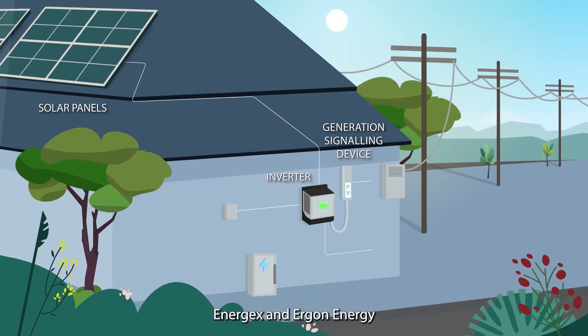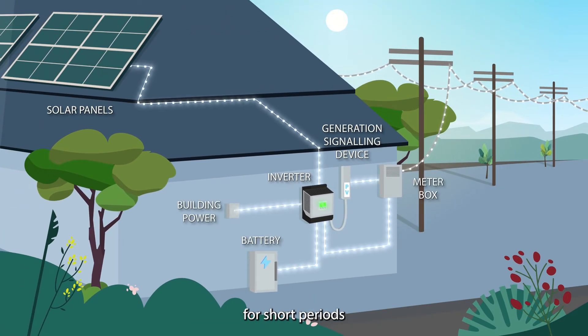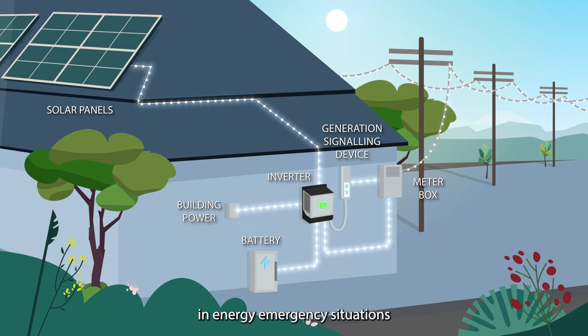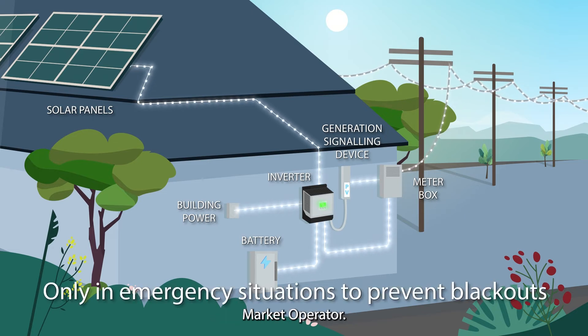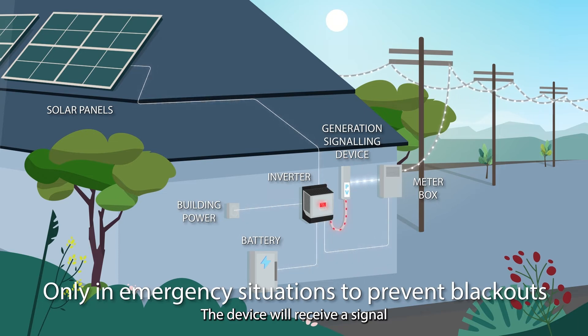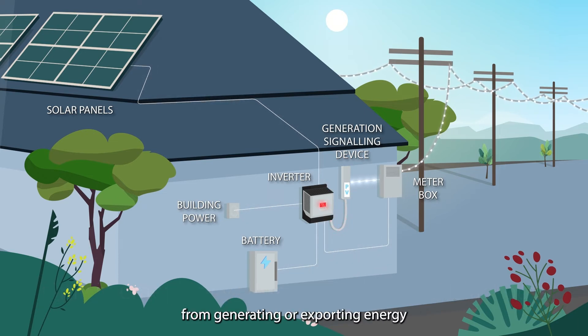Energex and Ergon Energy can then switch off these systems for short periods as a last resort in energy emergency situations when directed to do so by the Australian energy market operator. The device will receive a signal that temporarily stops the system from generating or exporting energy until the emergency has ended, when the system resumes normal operation.